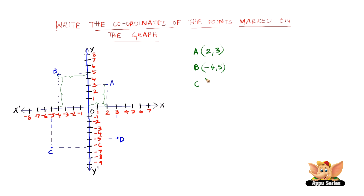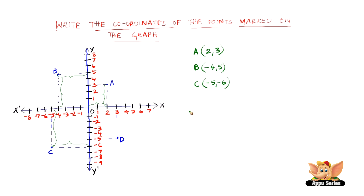Let us consider point C. We can clearly see that the distance of point C from the y-axis is -5, and the distance of the point from the x-axis gives us its coordinates in the third quadrant.